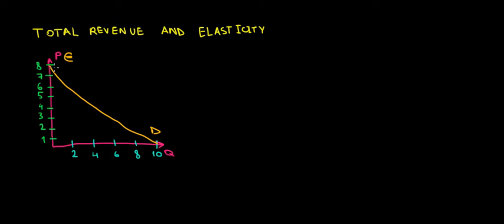Using common sense, if we look at our demand curve, when we have high prices we are very sensitive to changes in prices. For instance, if we have to pay for cheese 6 euros, we would buy two pieces. But if we increase the price to 7 euros, we would decrease our quantity demanded by a lot — we would only buy half a piece. When prices are relatively high, an increase in price makes us react a lot because it's already expensive.